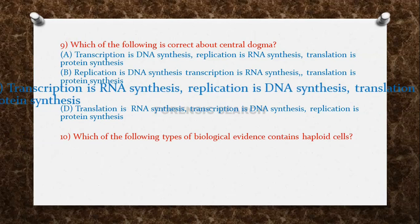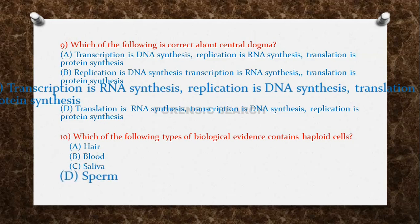The next question: which of the following types of biological evidence contains haploid cells? Option A: Hair. Option B: Blood. Option C: Saliva. Option D: Sperm. The correct answer is option D — Sperm.